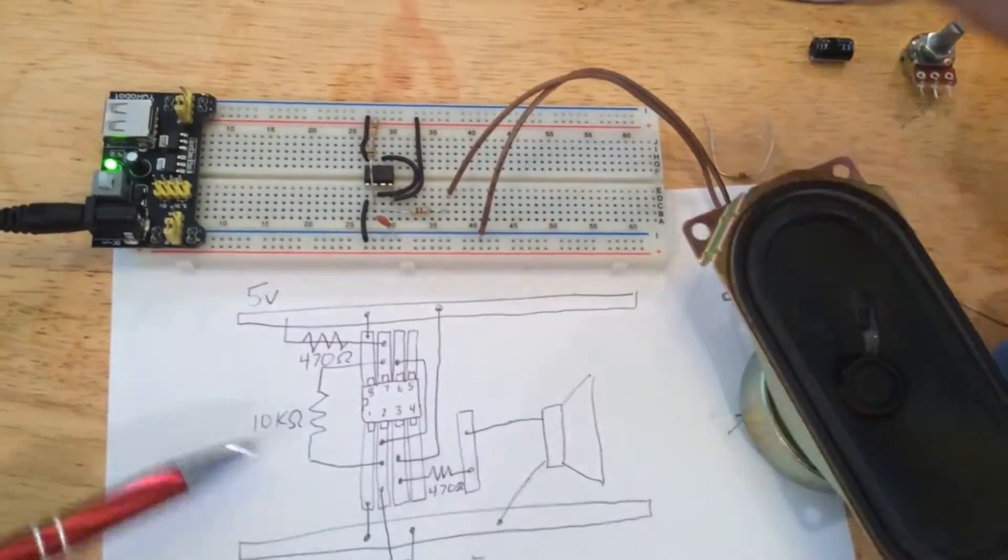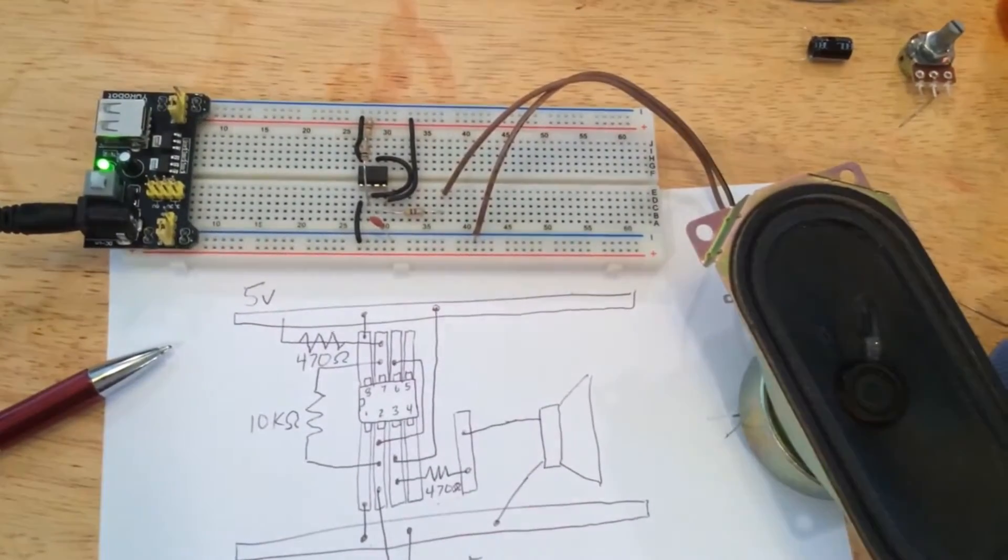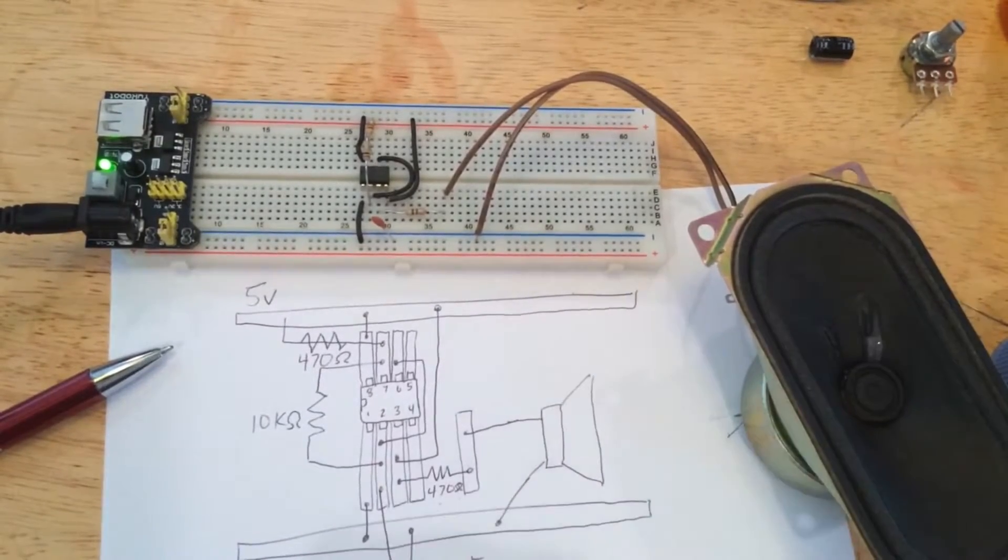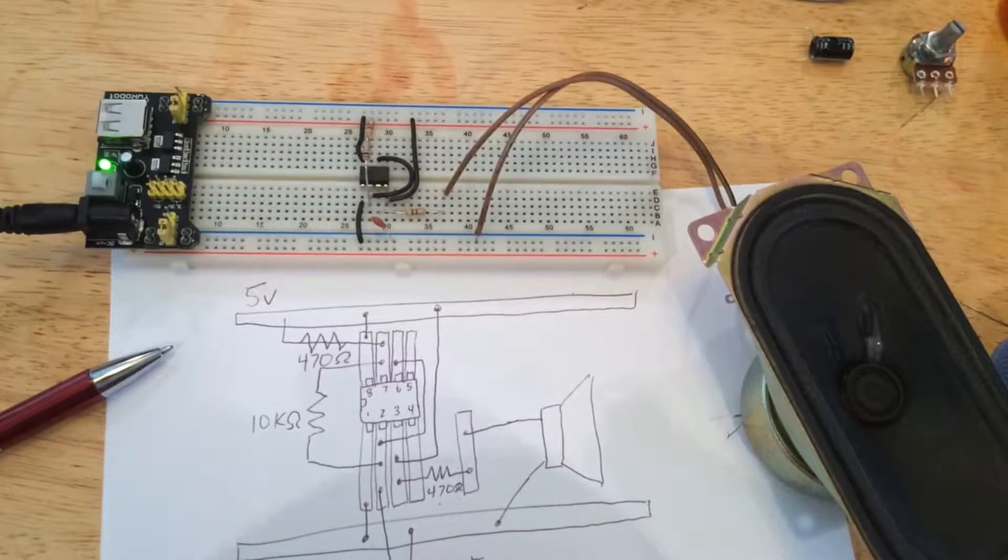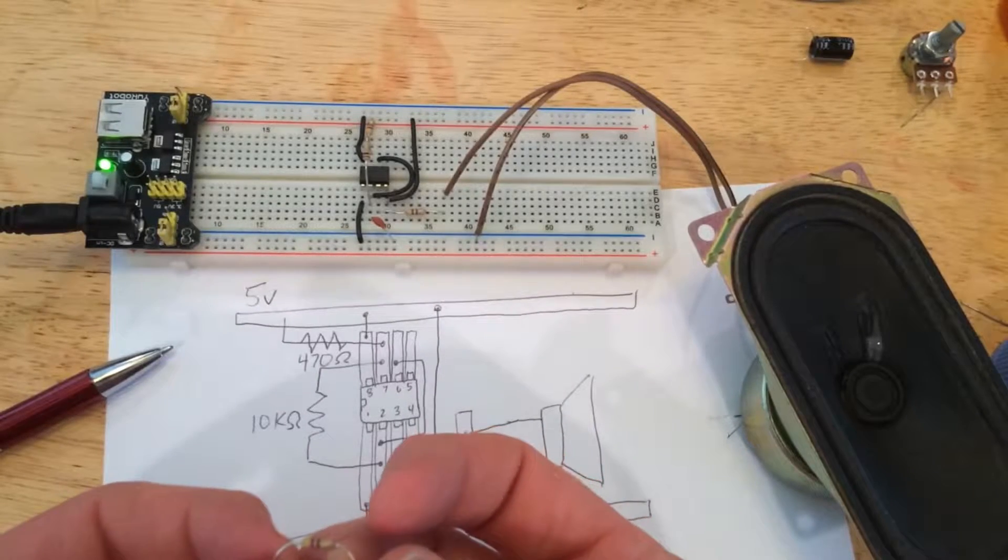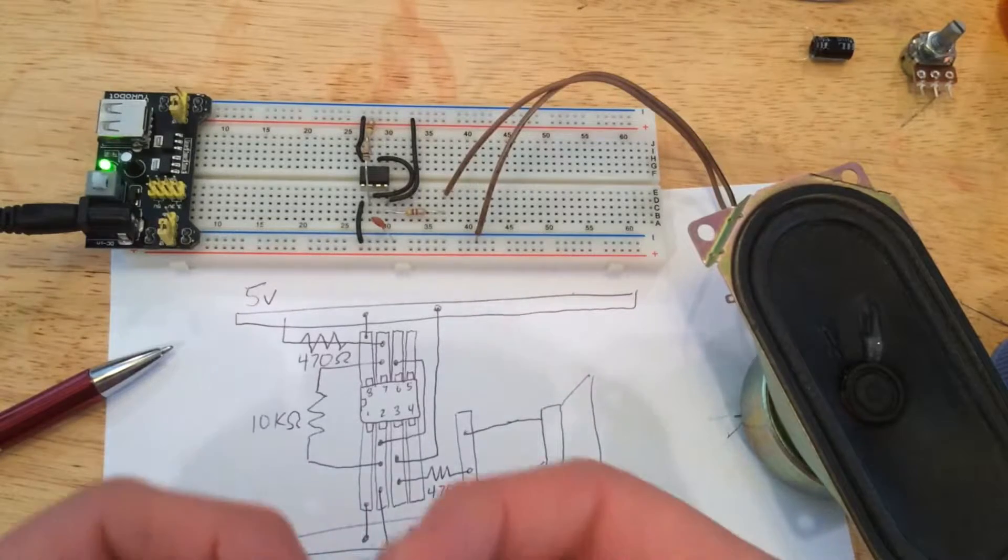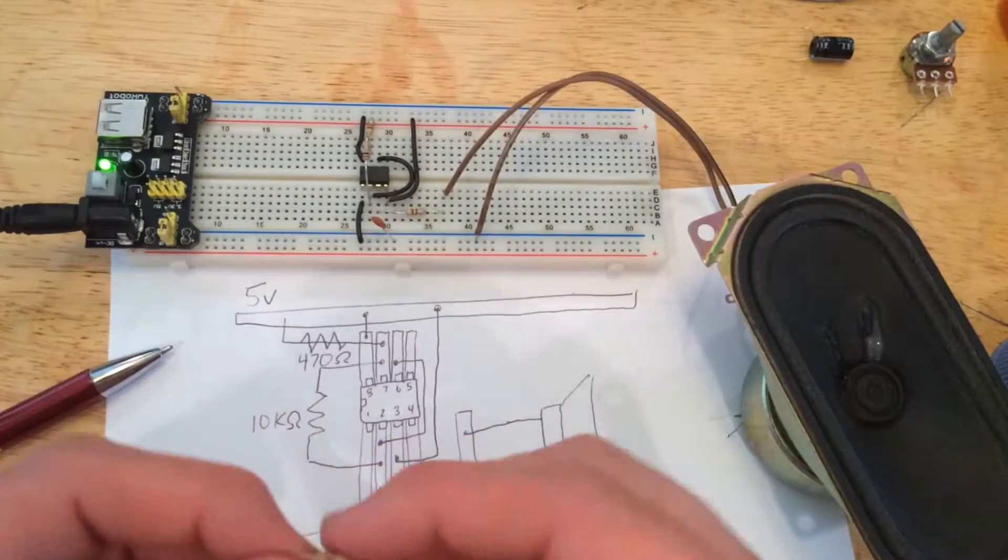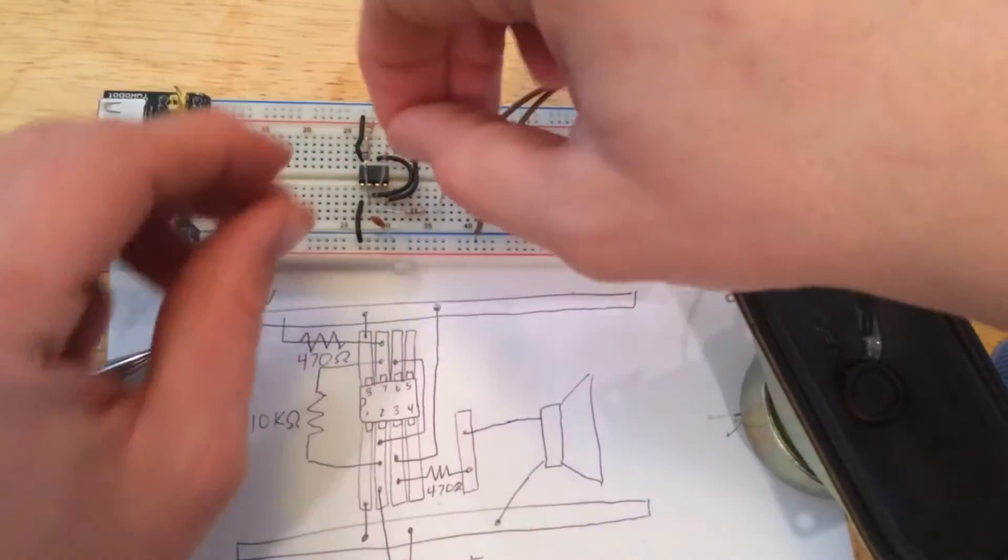Now what I wanted to do is see what the difference was if I added another resistor or changed the resistor out. This looks like a 47 ohm resistor, so it's a 470. If I add this to the same connection, it changes the tone, which is pretty interesting.